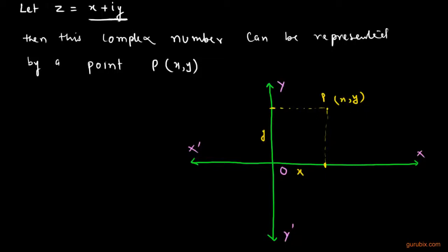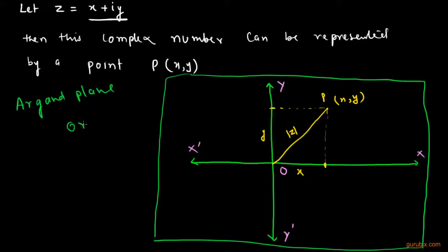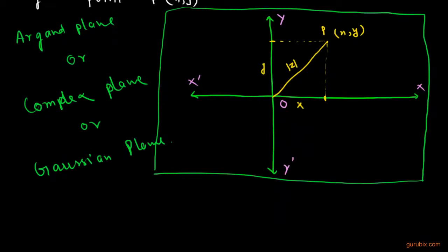The coordinate of this point P is x and y, so this point P represents the complex number x plus iota y. This straight line OP represents the modulus of the complex number z. The coordinate of point P represents the real and imaginary parts: x represents the real part and y represents the imaginary part. This plane is called the Argand plane, or we can say it is a complex plane, or we can say it is a Gaussian plane.